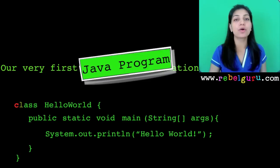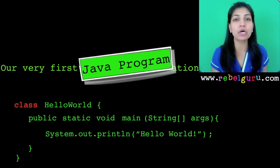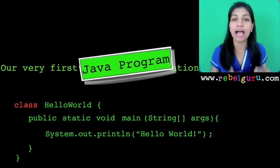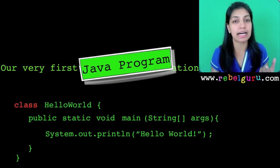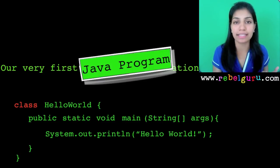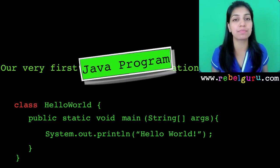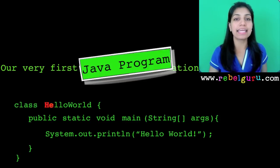Let's look at the program word by word. The first word is the keyword 'class'. Almost all your programs will have a class definition, and to start defining a class you use the keyword 'class', followed by the class name, then opening and closing curly braces. Everything within those curly braces is part of the class definition. Here, the keyword is 'class' and the name of the class is HelloWorld.